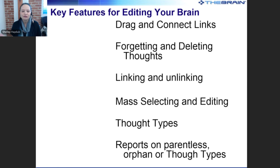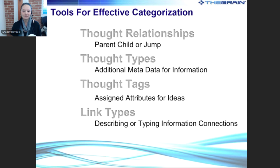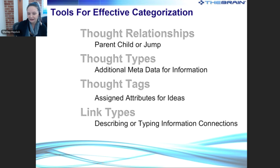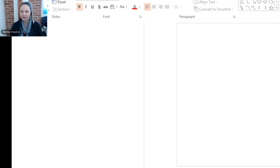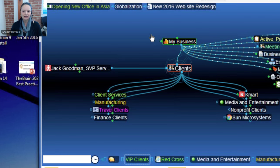We're going to cover dragging and connecting links, forgetting thoughts, and a lot of linking and unlinking — all done with our mass selection abilities. A lot of people aren't familiar with selecting more than one thought at once, so we want to get you comfortable with that. We'll also get into thought types, tags, and various reporting options. The primary ways for effective categorization are through your choice of relationship type — parent, child, or jump — thought types, tags, and link types.